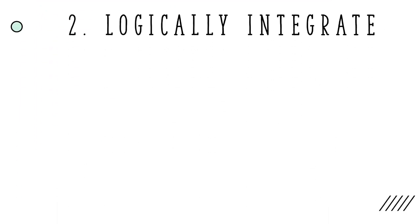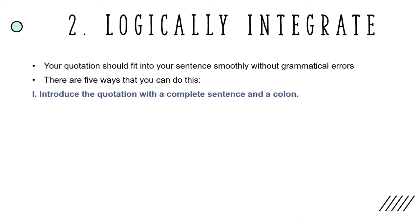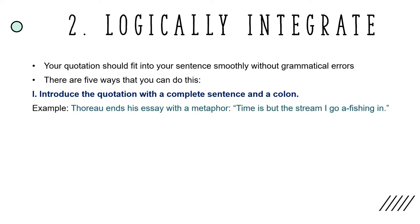Step two is to logically integrate the quotation into your text. Your quotation should fit into your sentence smoothly without grammatical errors. There are five ways that you can do this. First, you can introduce the quotation with a complete sentence and a colon. For example: "Thoreau ends his essay with a metaphor: 'Time is but the stream I go a-fishing in.'"